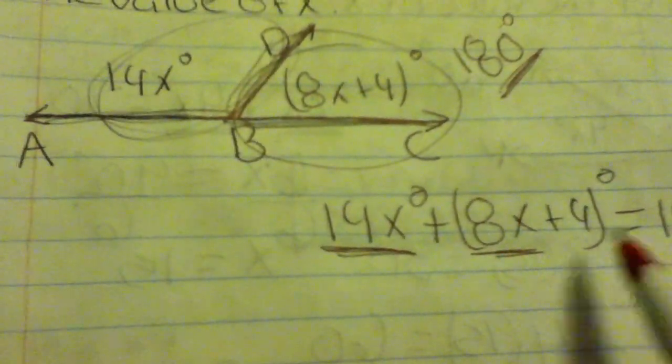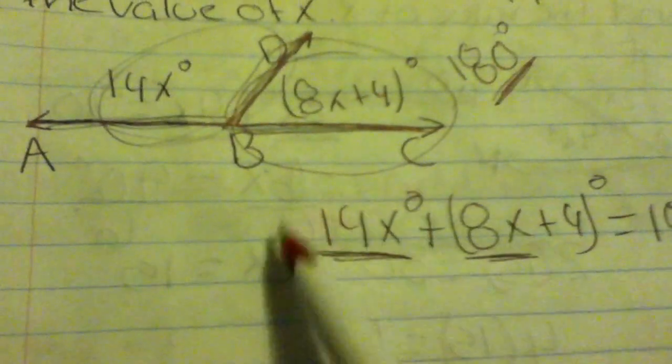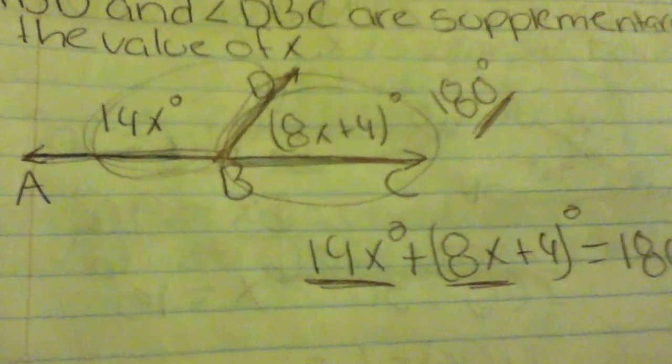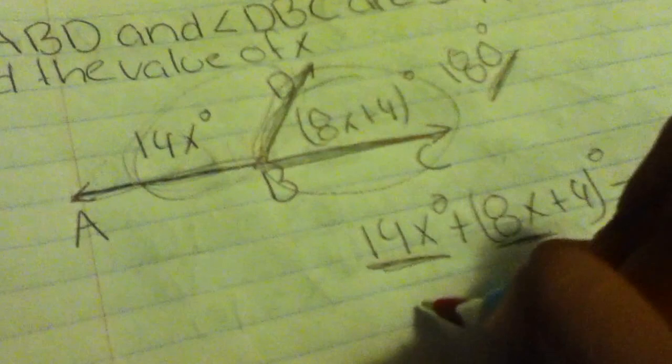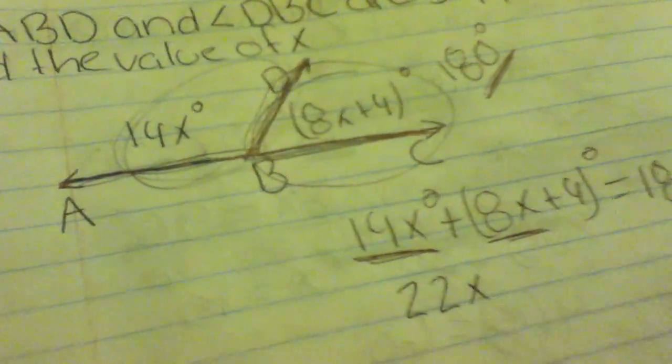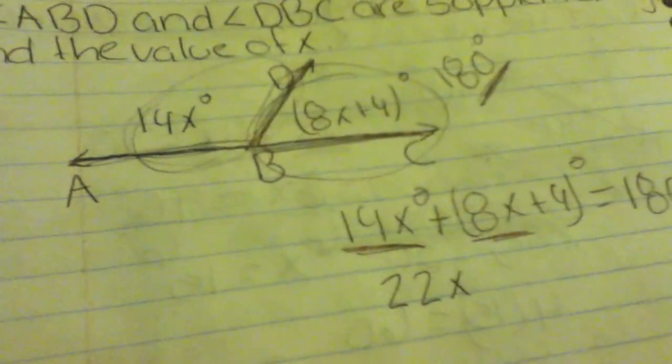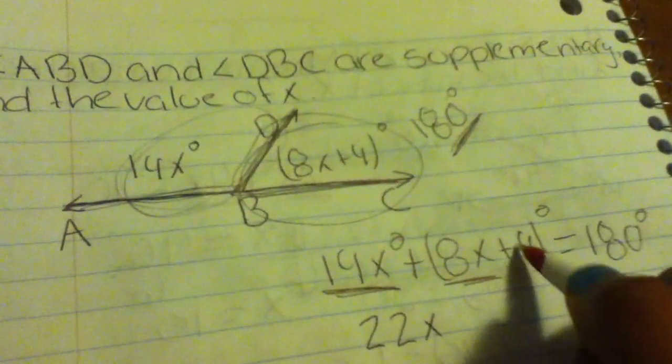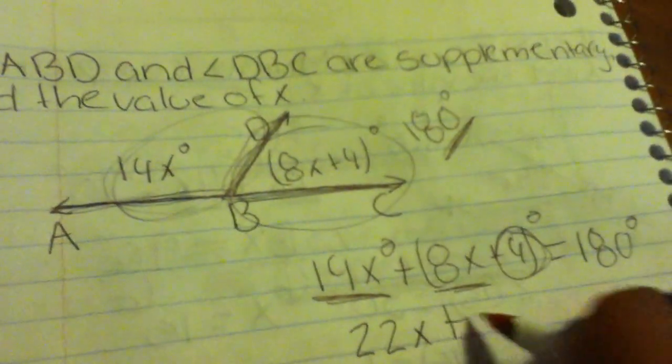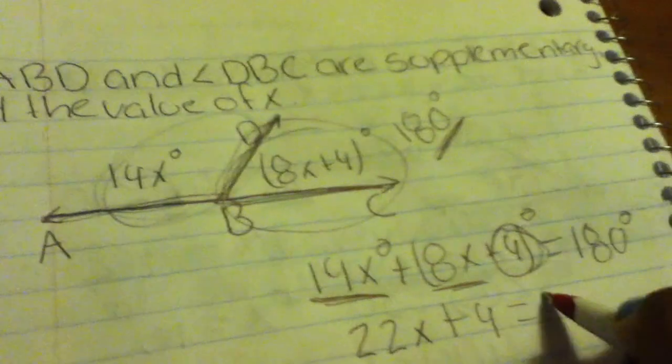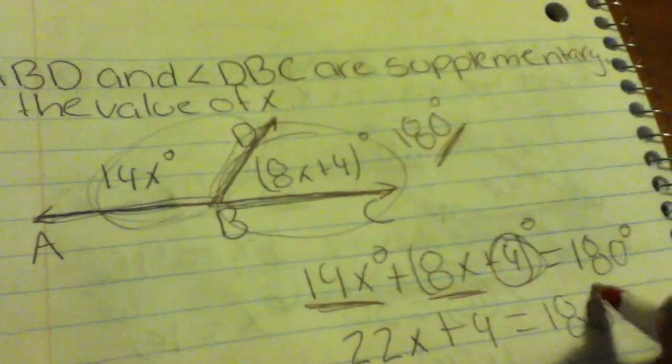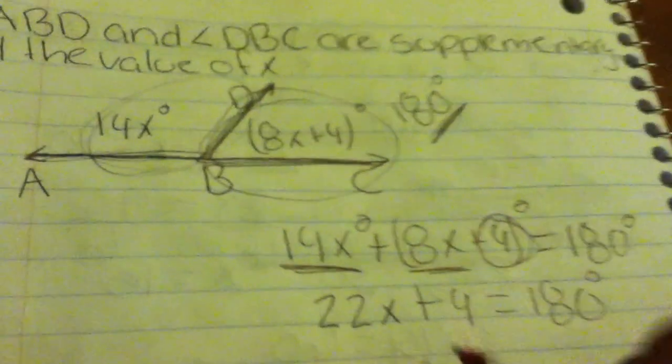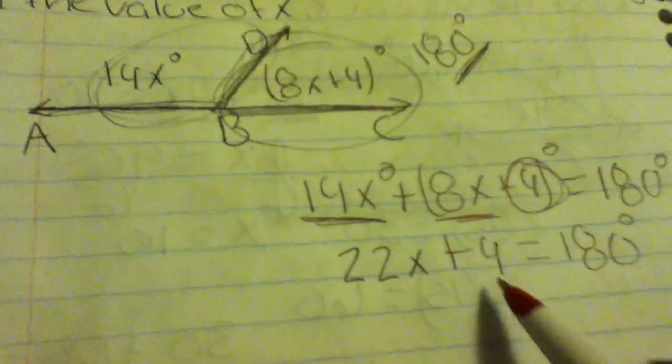14x and 8x both have an x, so they are like terms. When you add them together you get 22x. Then you have a 4 remaining with nothing to combine it with, so you just bring it down. Then you bring down your 180.